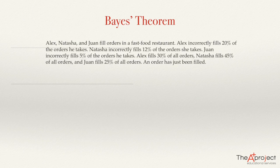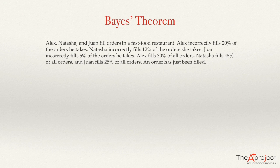Assume that Alex, Natasha, and Juan fill orders in a fast food restaurant. Alex incorrectly fills 20% of the orders he takes. Natasha incorrectly fills 12% of the orders she takes. Juan incorrectly fills 5% of the orders he takes. Alex fills 30% of all orders, Natasha fills 40% of all orders, and Juan fills 25% of all orders.